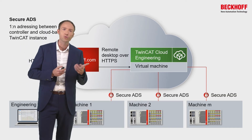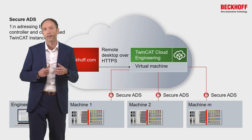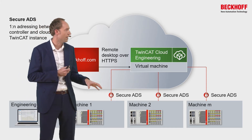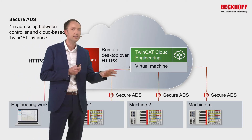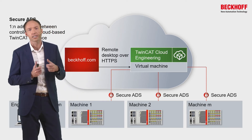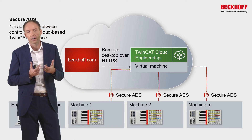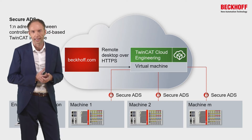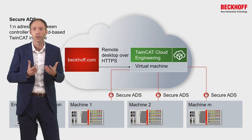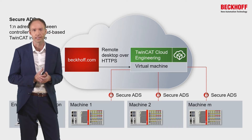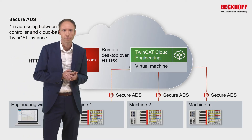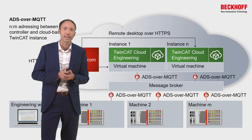Secure ADS is used in direct one-to-one connectivity scenarios where you want to couple one physical device with one TwinCAT Cloud Engineering instance. It is an extension to the regular ADS protocol, extended with security mechanisms based on TLS — a standard in the IT world. Secure ADS is fully transparent to the TwinCAT application, and so is ADS over MQTT.